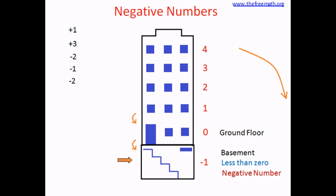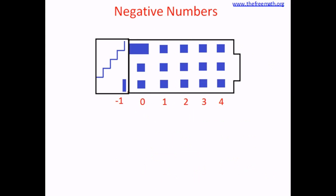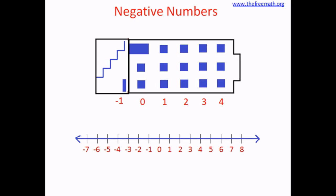Now let's turn this building and make it horizontal. Instead of the vertical building, if you turn it like this, you can see the numbers: the ground floor is zero, on the right-hand side you have the positive numbers one, two, three, four, and on the left-hand side you have the negative numbers. In mathematics, the same thing is shown on a line called the number line — zero is in the middle, positive numbers are on the right, and negative numbers are on the left.